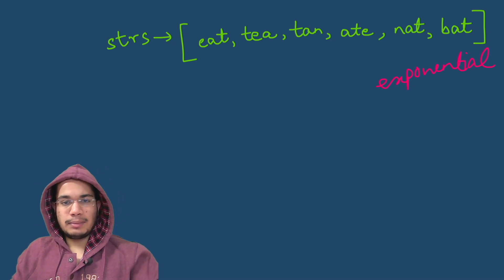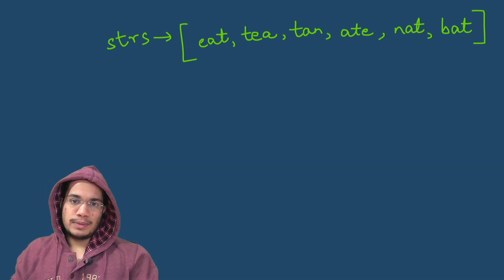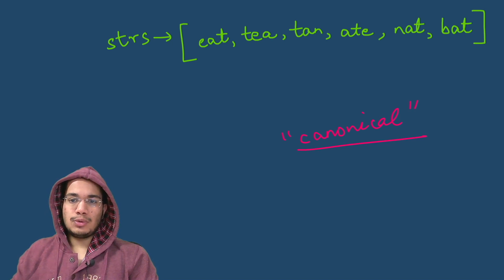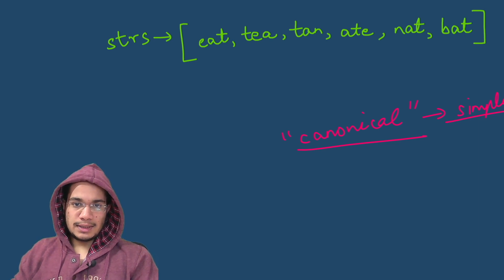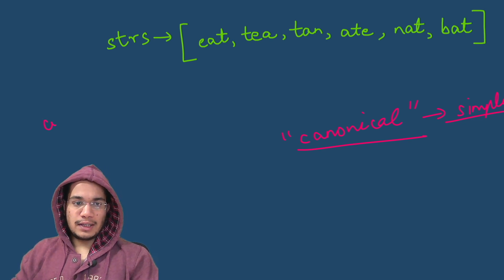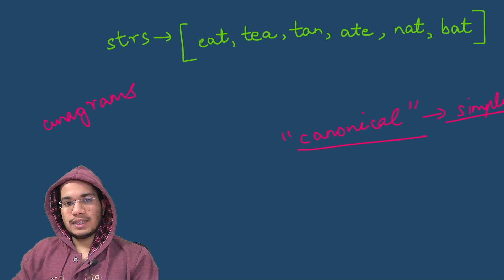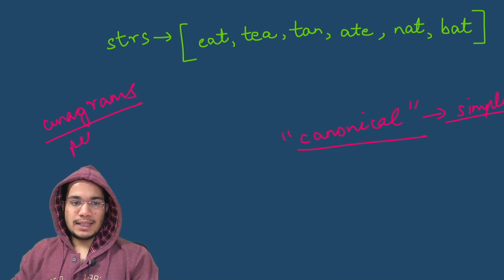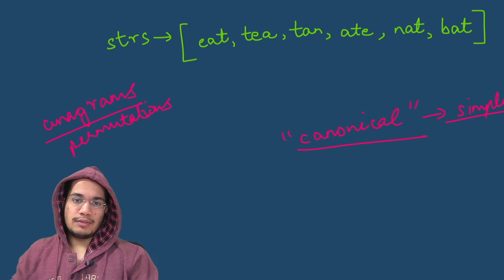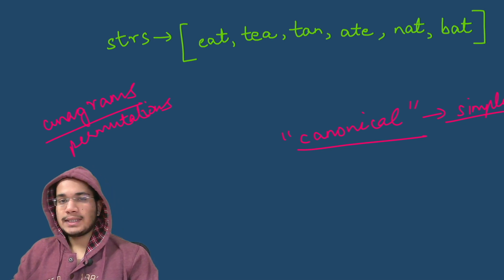The better approach depends on something known as canonical forms. The term canonical means converting something into its simplest form. For example, in this group of words the simplest form is when they are sorted, because by the definition of anagrams, two words that are anagrams have the same set of characters — they are permutations of each other. So if two words have the same characters and we sort both, they will be exactly the same word.